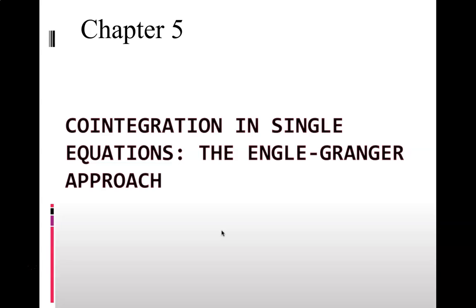Engle and Granger are the most important figures in co-integration. Granger is also famous for the method called Granger causality, which we often use to test the existence of causality from one variable to another. One of his biggest contributions is co-integration, as it extends from the unit root test and the ADF concept discussed in the previous chapter.